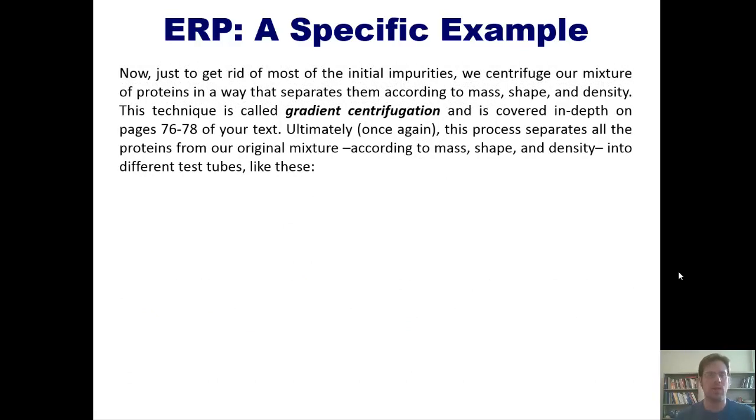So what do we do next? Well, now we want to get rid of all of the initial impurities that might be present in that solution. So as I was kind of hinting at before, we'll centrifuge our mixture of proteins in a way that separates them according to mass, shape, and density. This technique is called gradient centrifugation and is covered in depth on pages 76 or 78 of our text, which I invite you, my students, to read.